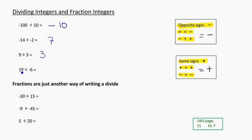And here we have 18, a positive 18, divided by a negative 6. So it's a positive divided by a negative. Those are opposite signs. I know we'll get a negative answer. And 18 divided by 6 is 3, so negative 3. Again, opposite signs and you will get a negative. Same signs, and you will get a positive.